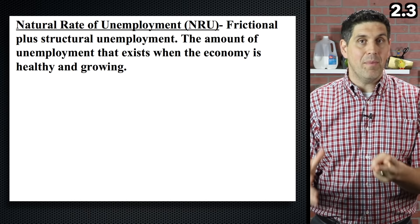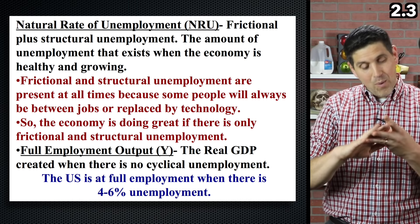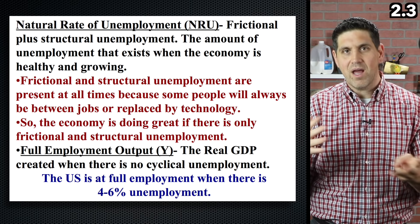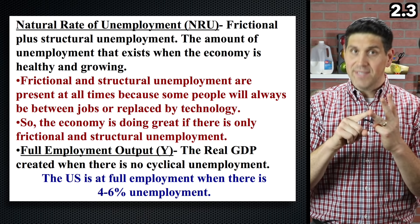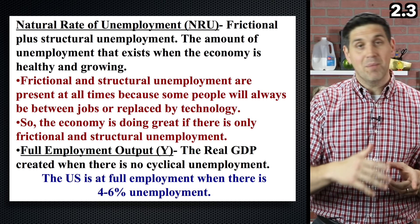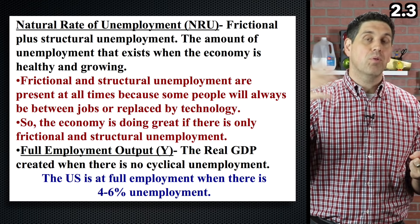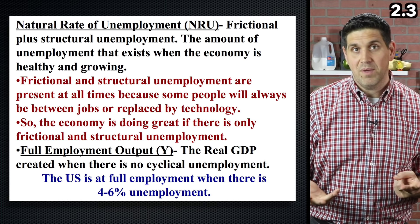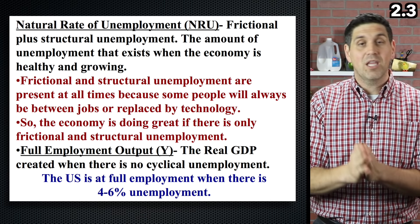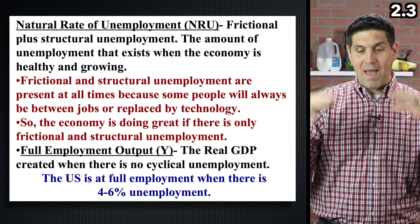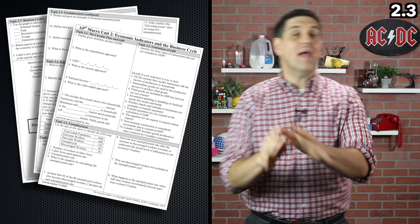You'll always have frictional and structural unemployment, but cyclical unemployment only exists when the economy is sick. This is a huge concept: when we talk about reducing unemployment, we're not trying to get it to zero because frictional and structural will always exist. The natural rate of unemployment is the amount of unemployment that exists at full employment, when there's no cyclical unemployment. For the United States, that's roughly 4–6% unemployment. If we have 8% unemployment, we definitely have cyclical unemployment and a recessionary gap. Full employment does not mean zero percent unemployment.